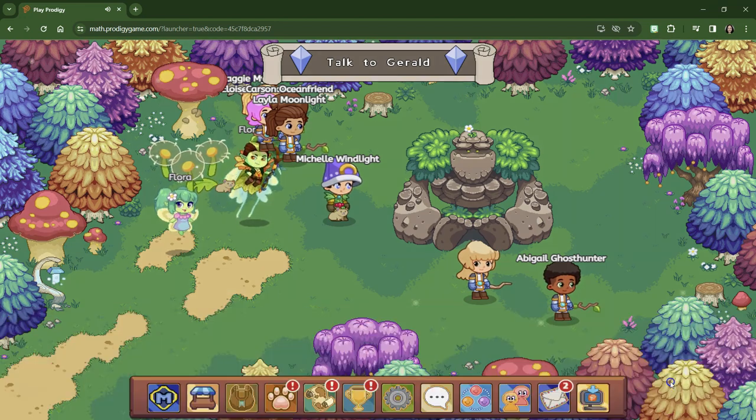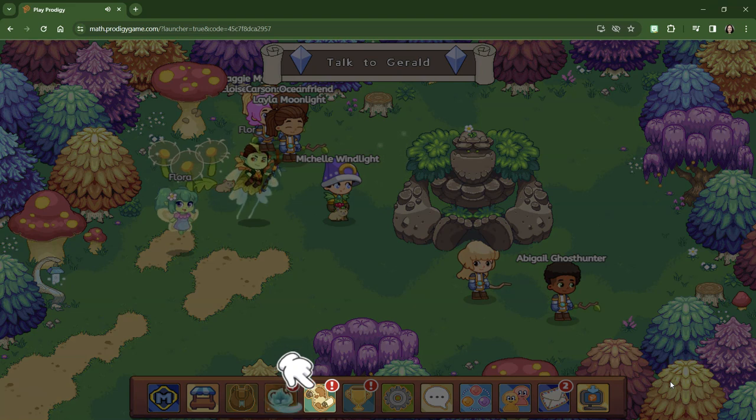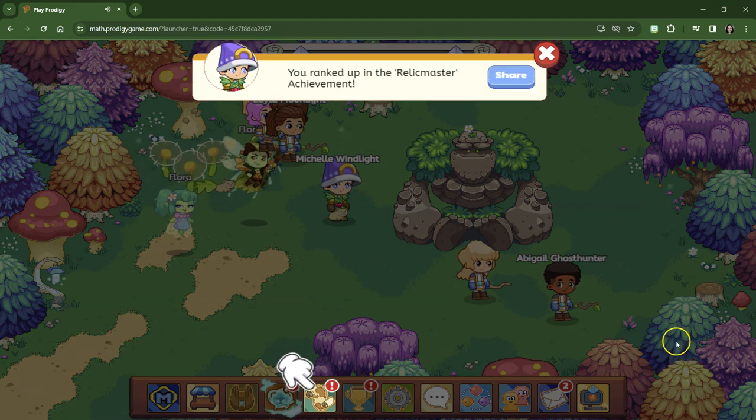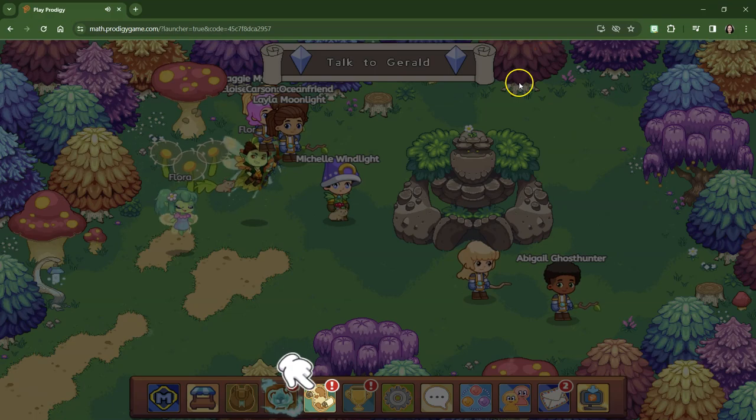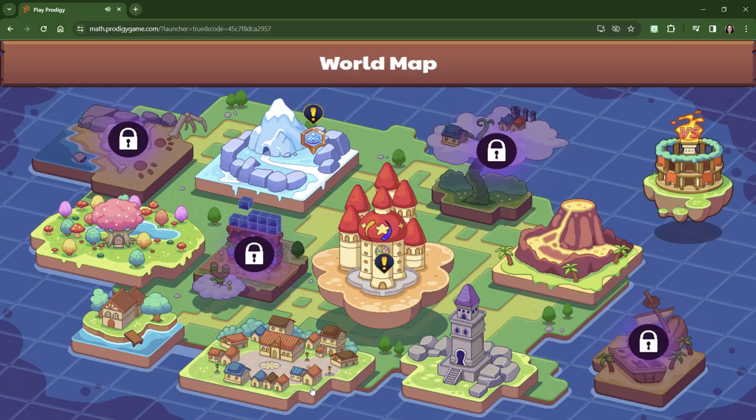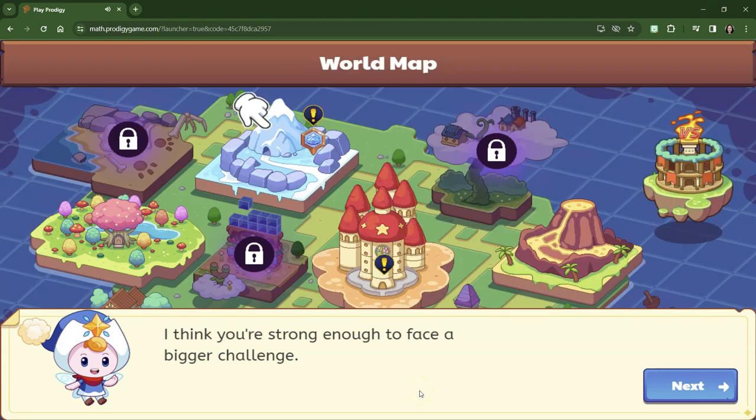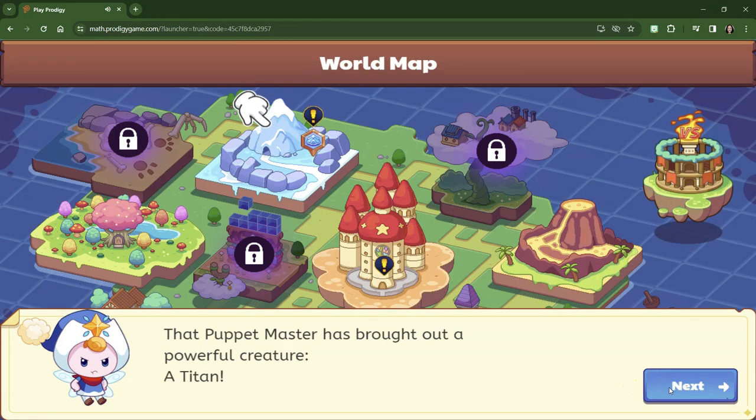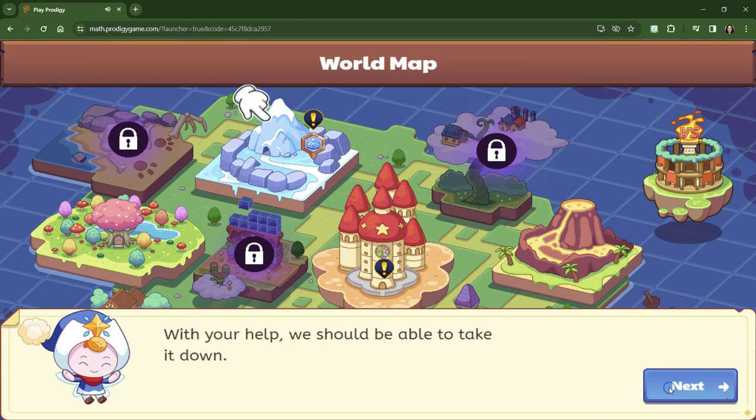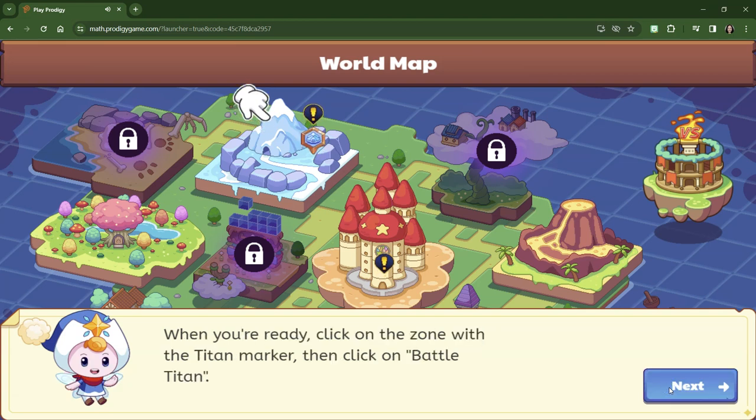Let's go to Shiver Chill. Shiver Chill Mountains. We are now a Relic Master. Let's check out our map. I think you're strong enough to face a bigger challenge. The Puppet Master has brought out a powerful creature, a Titan. With your help, we should be able to take it down. When you're ready, click on the zone with the Titan marker and then click Battle Titan.